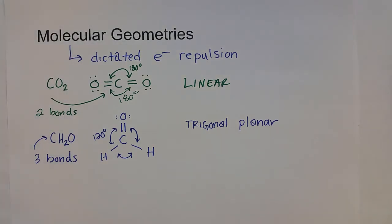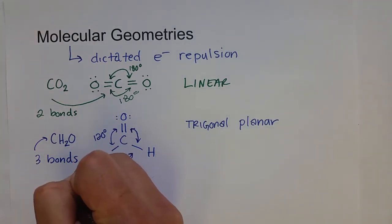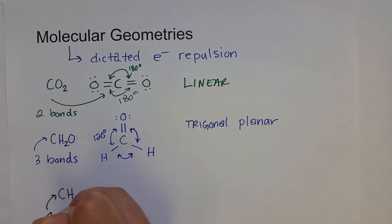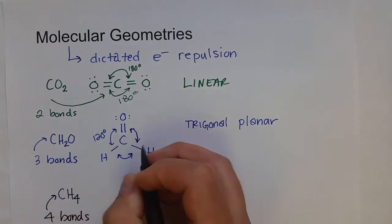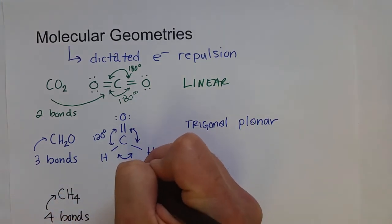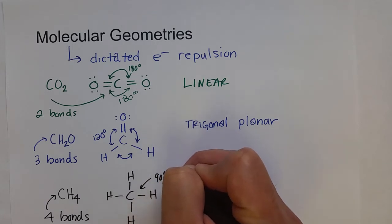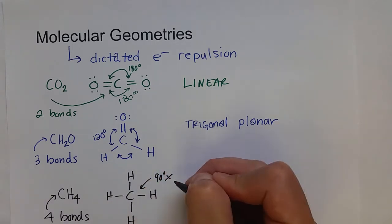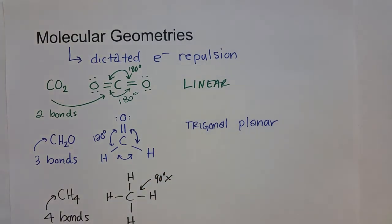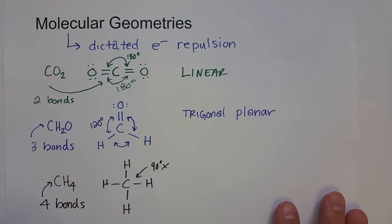So that's three bonds, and of course carbon can go up to four bonds, four single bonds, like in methane CH4. Now if I just drew the structural formula for methane, you might think that they can get 90 degrees apart from each other. But that's untrue. Not true.